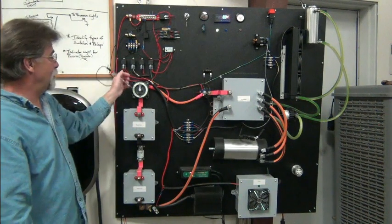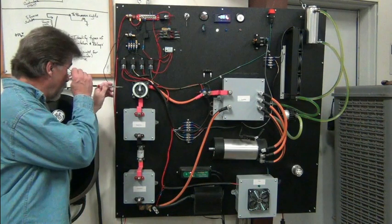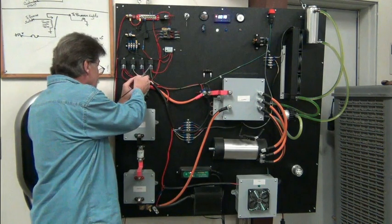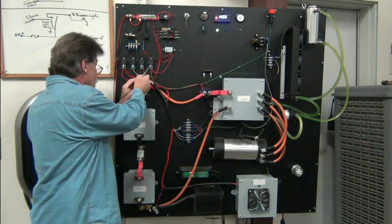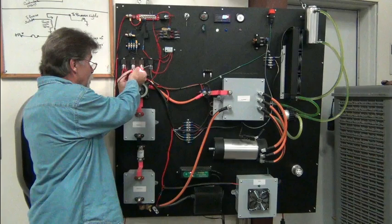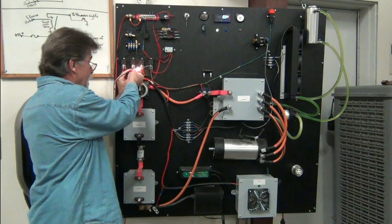And it would open up that relay. So right now we should have power if I can get in there without shorting things out. Yep, so we have power going through our safety interlock relay.